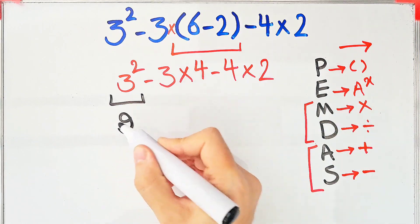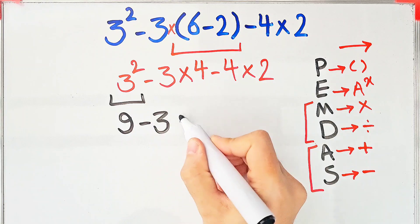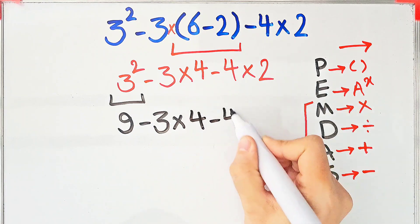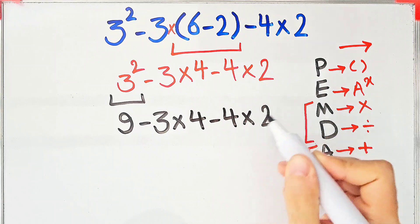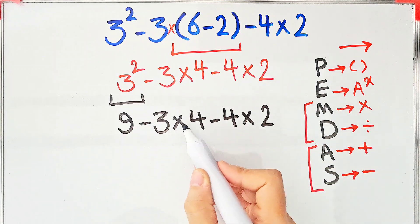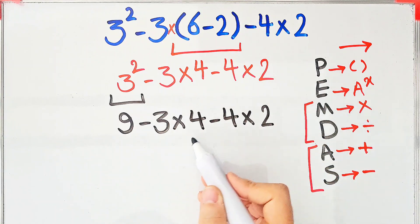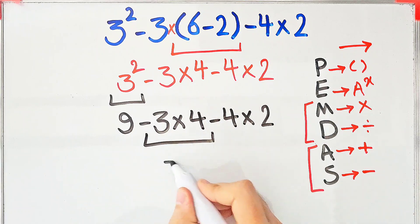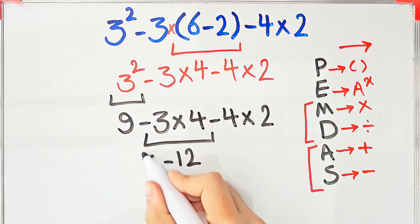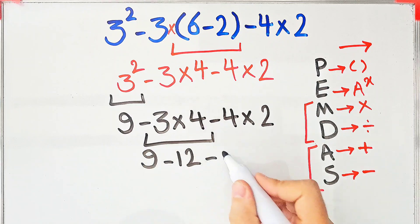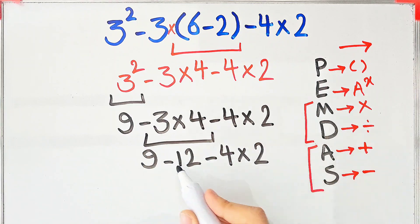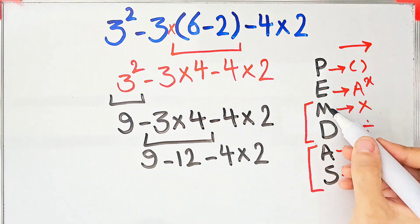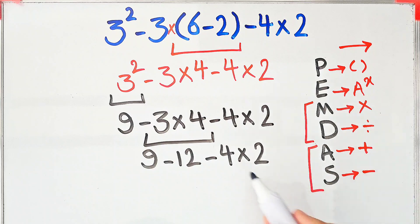Now we have 9 minus 3 times 4, then minus 4 times 2. In this step we have subtraction and multiplication — first we simplify the multiplication. Negative 3 times 4 equals negative 12, giving us 9 minus 12, minus 4 times 2. We do this multiplication next because multiplication has higher priority than subtraction.